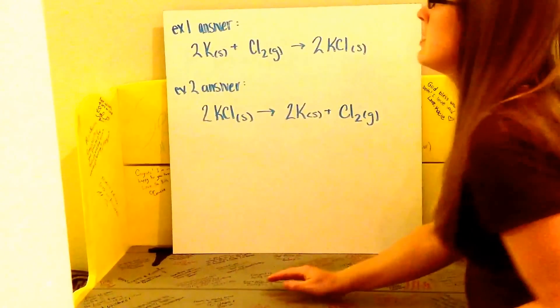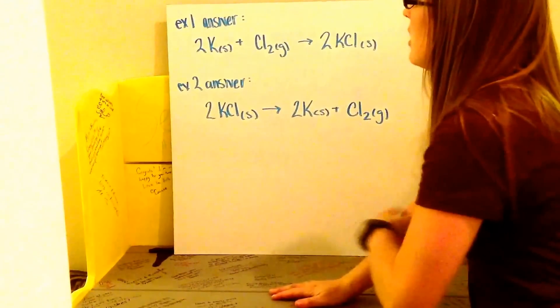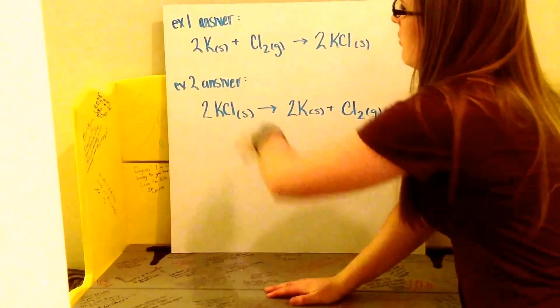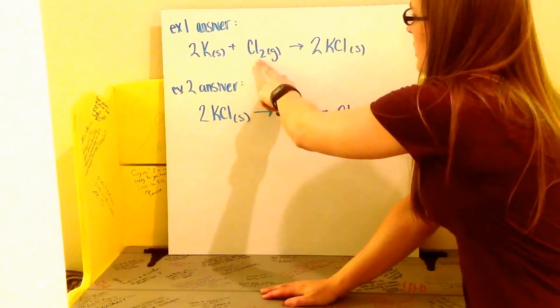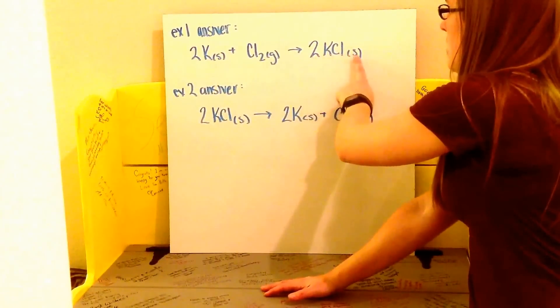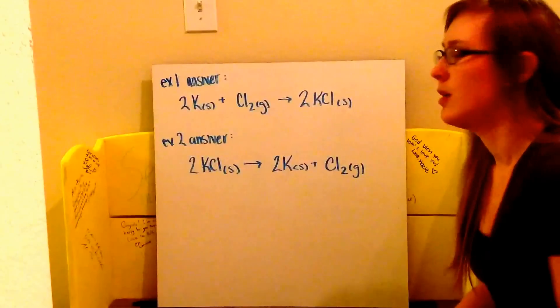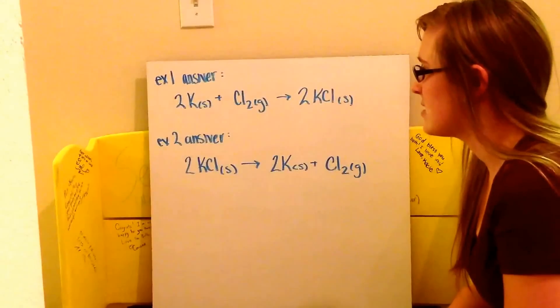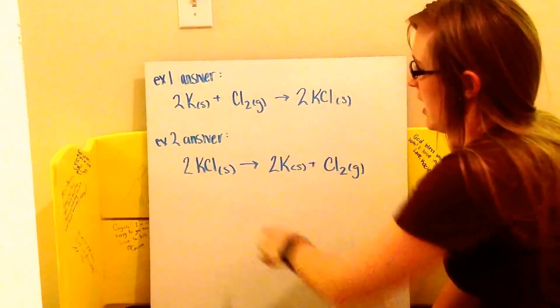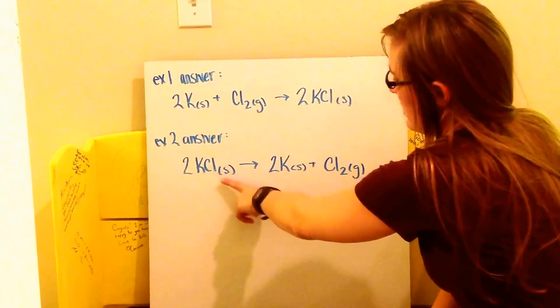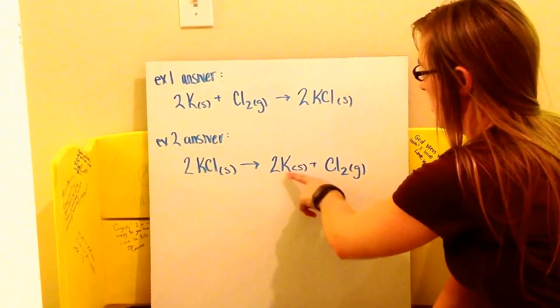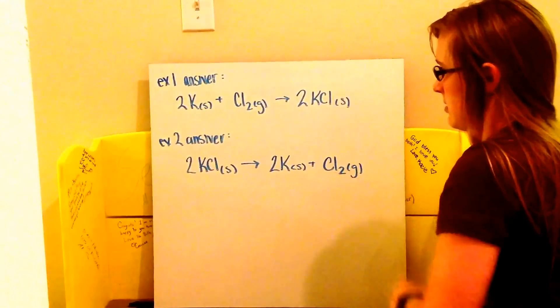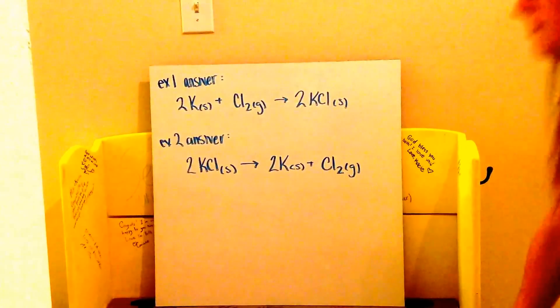For the synthesis reaction you tried, you should have got the answer of two potassium solid plus one chlorine gas molecule yields two KCl solid or potassium chloride. For the second answer, you should have got two potassium chloride solid yields two potassium solid plus one chlorine gas.